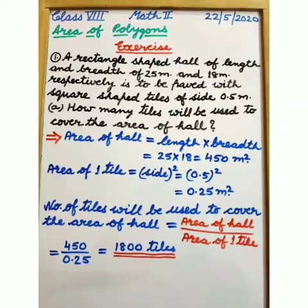Now, to find number of tiles will be used to cover the area of hall, we will divide area of hall by area of one tile. Area of hall 450 is divided by area of one tile 0.25. We get 1800 tiles.